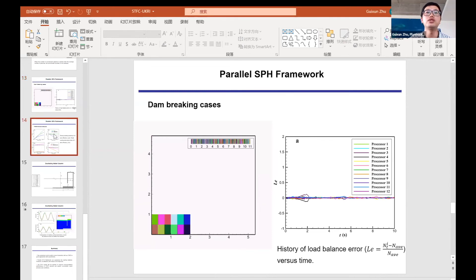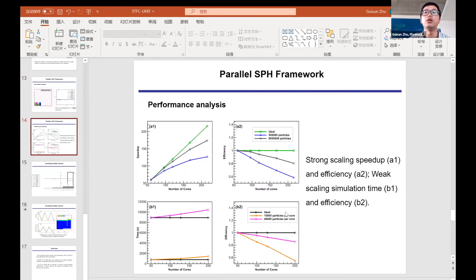In this scaling test, for the weak scaling case, we have 110,000 particles per core and 40,000 particles per core. One of the panelists, Professor Ben Rogers has his hand up. Can you hear me? Yes, I can hear you. It's a very nice presentation, very interesting. I just got one suggestion and one question.